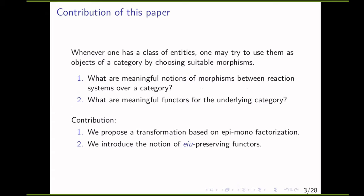Whenever one has a class of entities, one may try to use them as objects of a category by choosing suitable morphisms. Two natural questions which come up are: what are meaningful notions of morphisms between reaction systems over a category, and what are meaningful functors for the underlying category? In this paper, we propose two such transformations: the first is based on epi-mono factorization, and the second is based on EU-preserving functors.